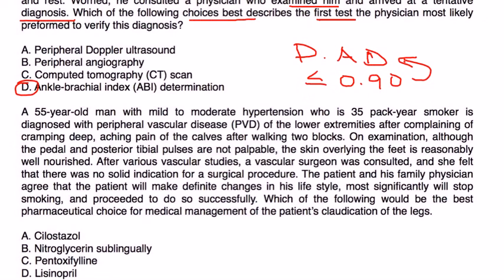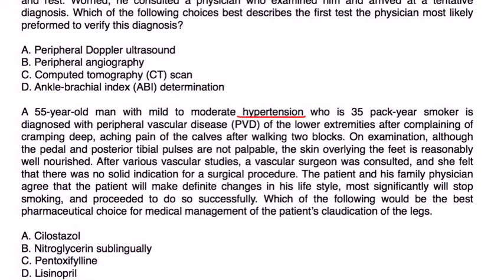And finally, a 55-year-old man with mild to moderate hypertension, 35 pack-year smoker, diagnosed with peripheral vascular disease of the lower extremities, complaining of deep aching pain of the calves during walking. On exam, although the pedal and posterior tibial pulses are not palpable, the skin overlying the feet is reasonably well nourished. After various vascular studies, the vascular surgeon was consulted and she felt that there was no solid indication for a surgical procedure. The patient and his family physician agree that the patient will make definite changes in his lifestyle, most significantly will stop smoking.